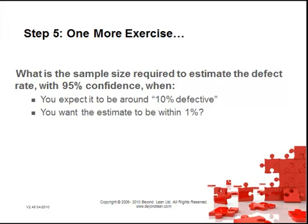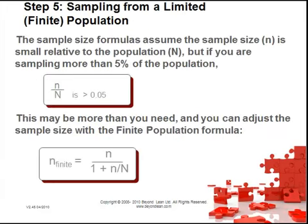One more exercise: what is the sample size required to estimate the defect rate with 95% confidence when you expect around 10% defective and want the estimate within 1%? Take a couple of minutes and carry out that calculation. For sampling from a finite or limited population, if you are sampling more than 5% of the population — where n divided by capital N is greater than 0.05 — this may be more than you need, and you can adjust the sample size using the finite population correction formula.